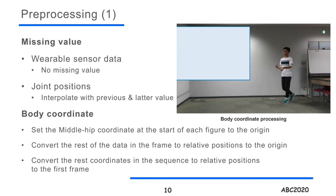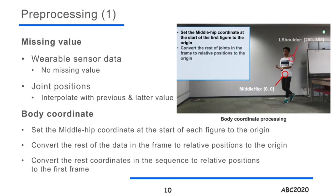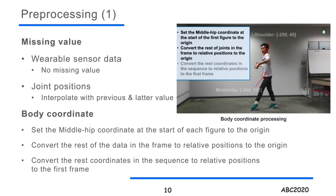For body coordinates, we have applied the following processing methods in order to obtain the real figure movement information. First, we set the middle hip coordinates at the start of each figure to the origin. Then, we convert the rest of the data in the frame to relative positions to the origin. Finally, we convert the rest of the coordinates in the sequence to relative positions to the first frame.